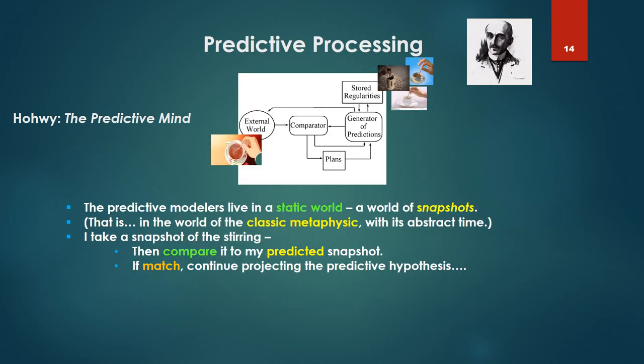So the predictive modelers actually avoid this nicely because they live in a static world. It is a world of snapshots. That is, they live in the world of the classic metaphysic, as we described in the previous parts, with its abstract time. So in the comparator model, in my diagram at the top there, I have the external world. I take a snapshot of that stirring. I pass it through my comparator. And if there's a match, and I'm comparing it to my predicted snapshot, and if there's a match, I continue projecting the predictive hypothesis. And then this, of course, this is a nice loop that continues. And I take another snapshot, compare it to the next predicted snapshot. If match, continue with my predictive hypothesis. If the match is too divergent, if there isn't a match, if the discrepancy is too divergent, supposedly the picture on the left wins.